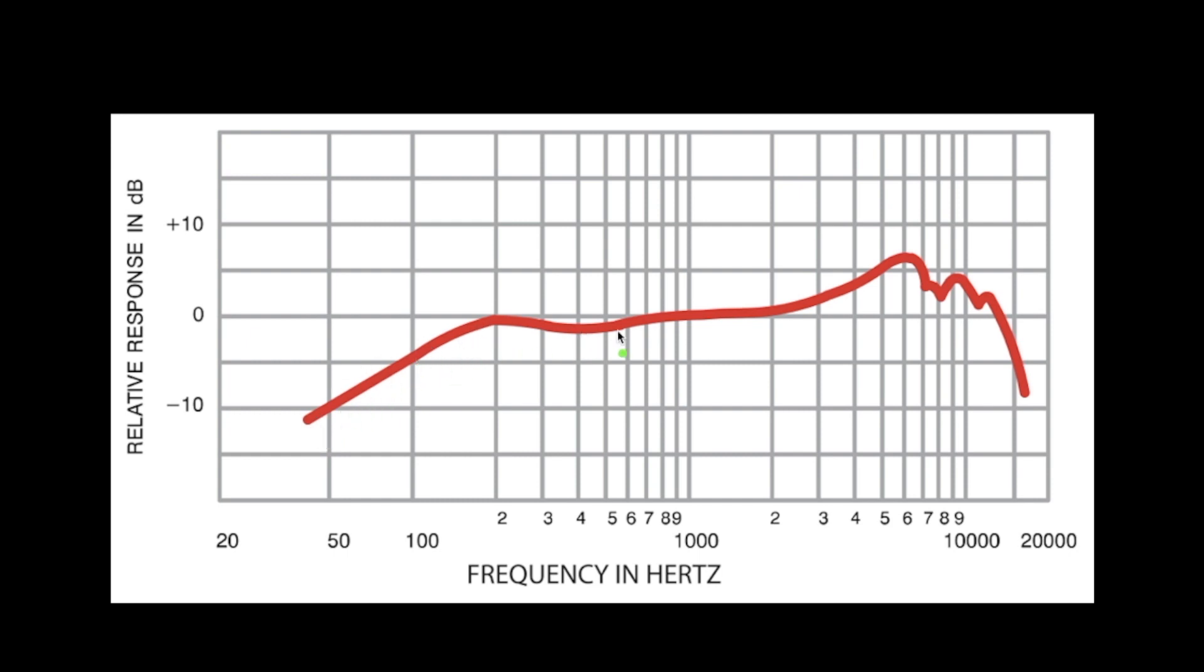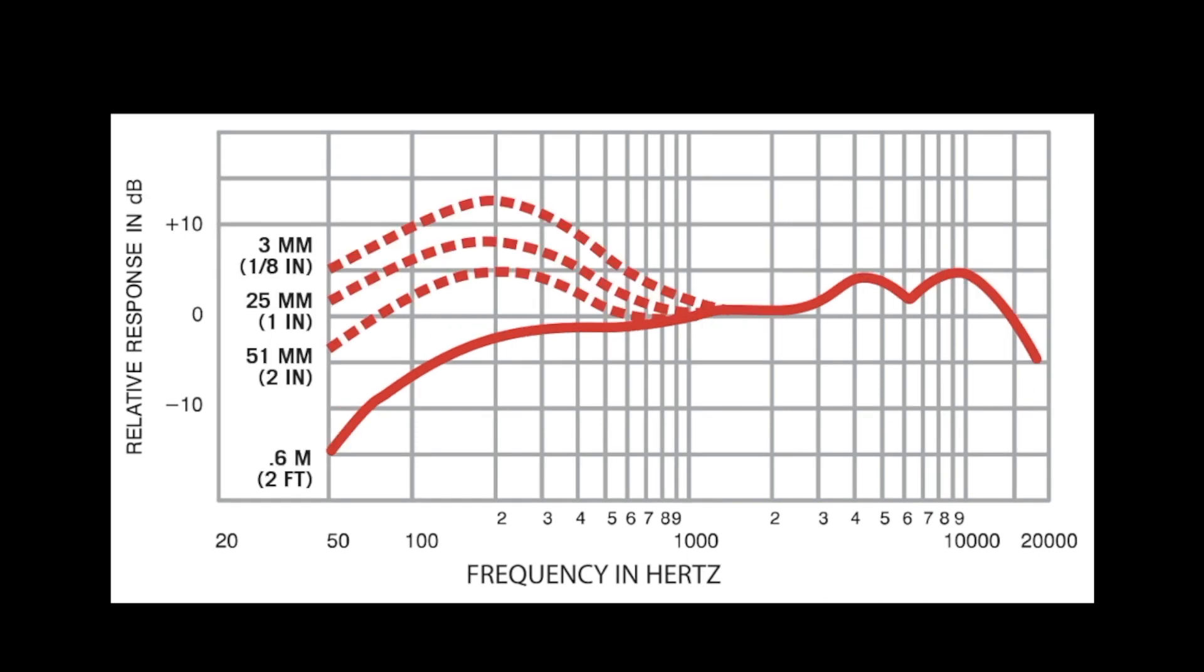What that last chart doesn't show us is something we call proximity effect, which basically is what it sounds like: the amount of distance between, let's say, the instrument or a singer as an example, and the actual diaphragm or capsule of the microphone.